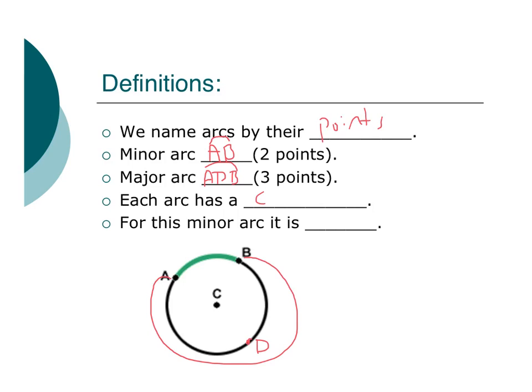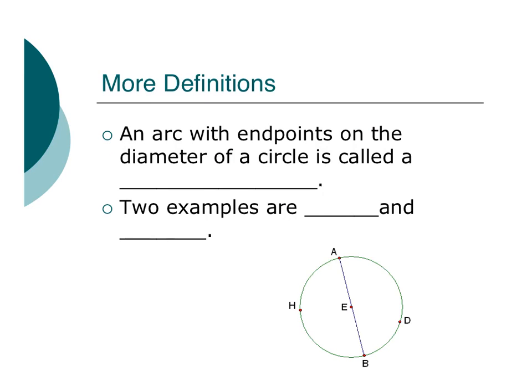Each arc has a center. And for this minor arc, that center would be C. An arc with endpoints on the diameter of the circle is called a, hmm, it's half a circle. It is a semicircle. Oh, yeah.